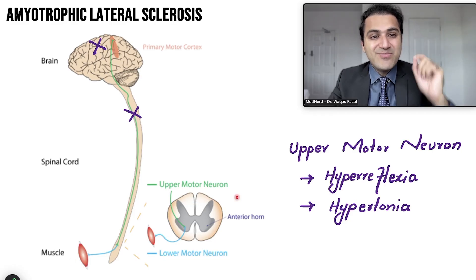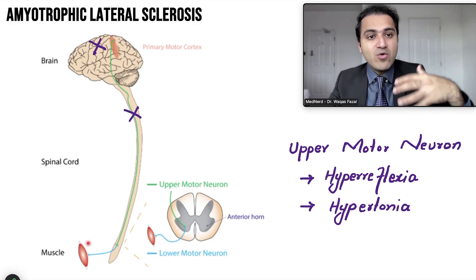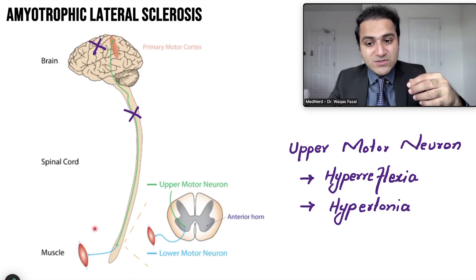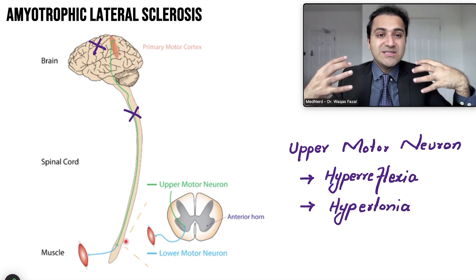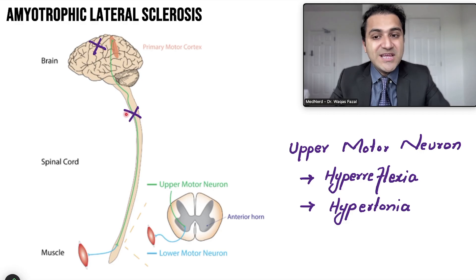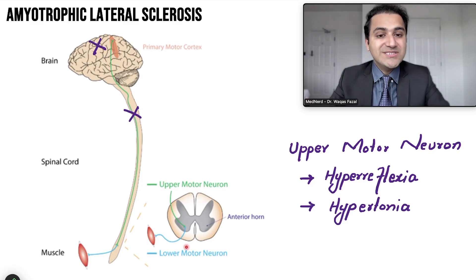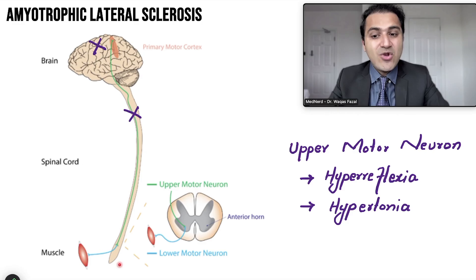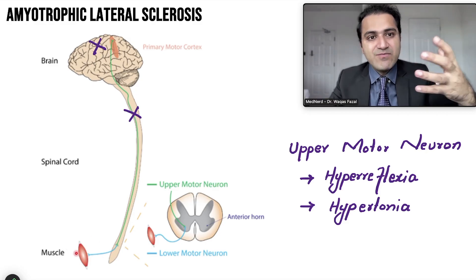Therefore you will see hyperreflexia in these patients. Similarly, there is a certain amount of muscle tone present at all times because of this circuit, but the upper motor neurons inhibit it so the muscles don't go into severe spasm. Whenever there is upper motor neuron damage, that inhibitory signal is lost and the resting muscle tone increases, producing hypertonia. So the lower synapses become hyperactive, resulting in hyperreflexia and hypertonia in upper motor neuron lesions.